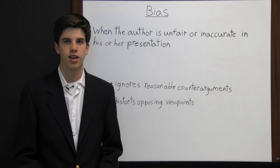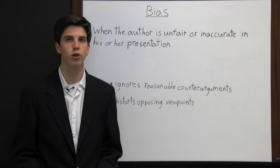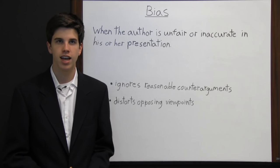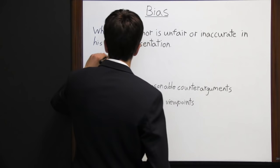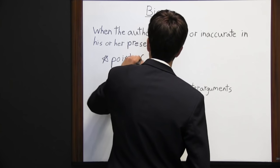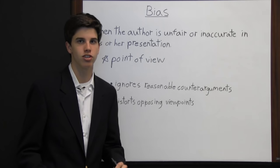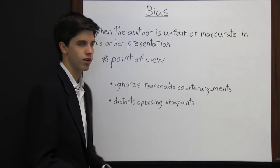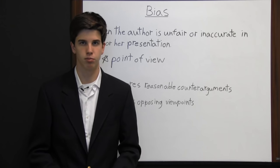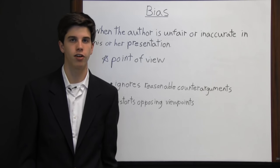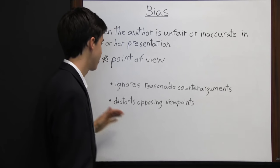A bias is basically when an author is unfair or inaccurate in their presentation of something. In their attempt to persuade, writers often make mistakes in their thinking patterns and writing choices. This is because every author has a point of view — the way they look at something, the way they see a certain situation. Because they have this point of view, they naturally will show it through their writing. It's not necessarily bad for an author to have a point of view, but it is a problem when they include it inappropriately in their writing.